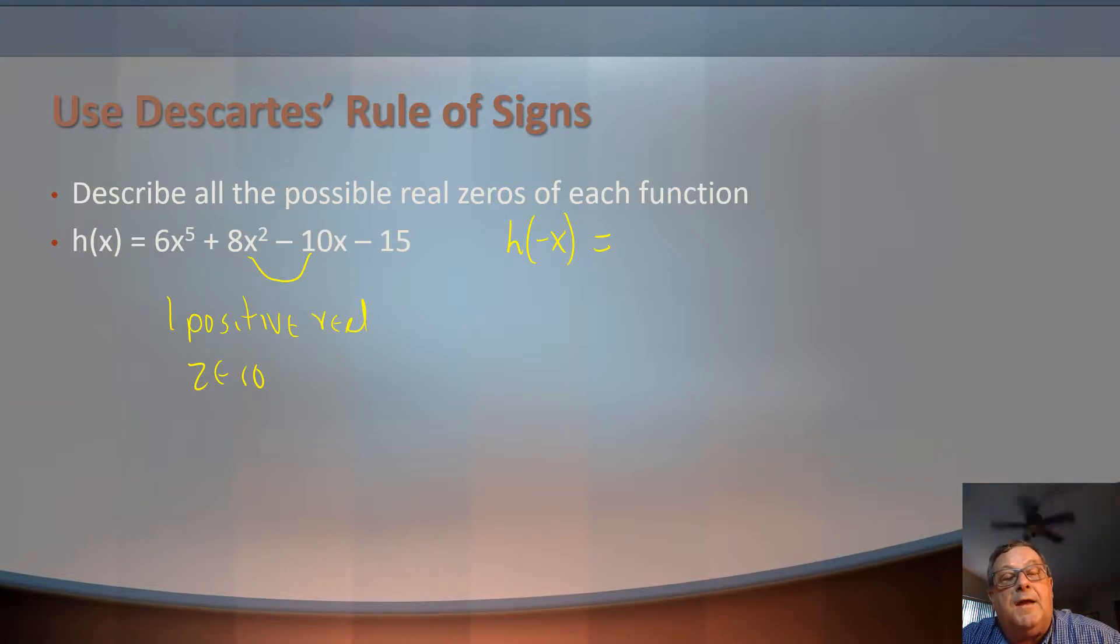If we had 6 raised to the power of... I should put negative x in here. 6 times negative x raised to the fifth power. Let's say that x is a negative number here, and it's raised to the fifth power.